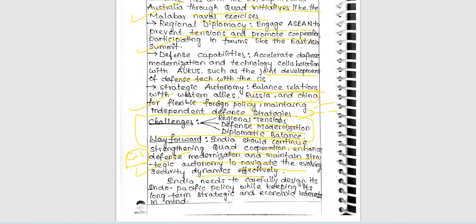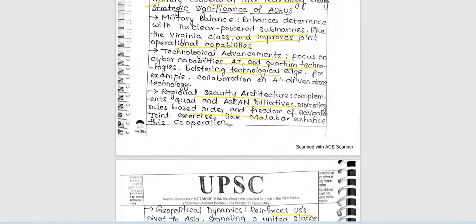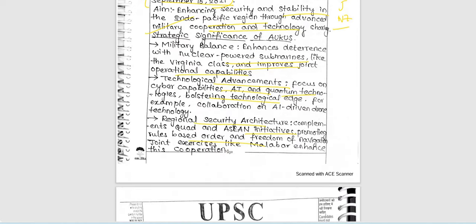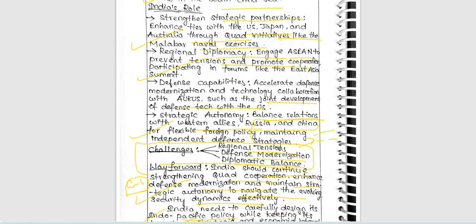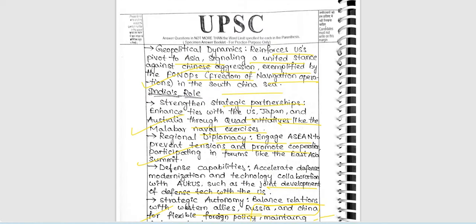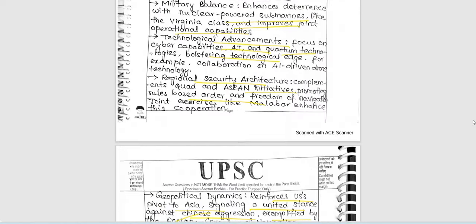Way forward: India should continue strengthening Quad cooperation, enhance defense modernization, and maintain strategic autonomy to navigate evolving security dynamics effectively — a very good point. India needs to carefully design its Indo-Pacific policy while keeping its long-term strategies and economic interests in mind — good futuristic mode connection. We can also include the recent AUKUS expansion with Japan or New Zealand, and whether India should be part of AUKUS or not, plus China's perception regarding the challenges.